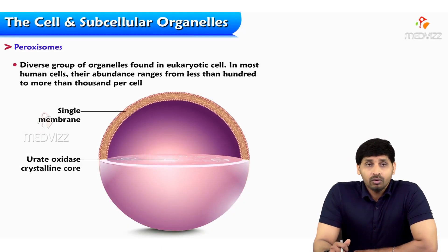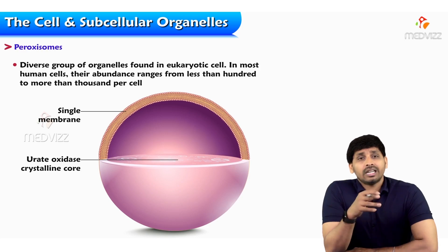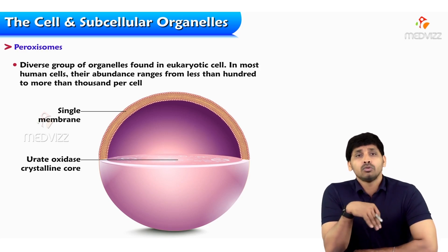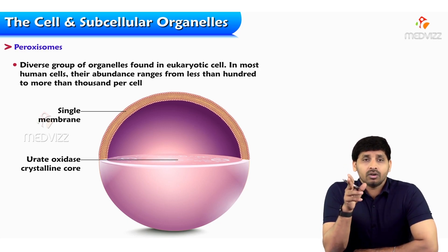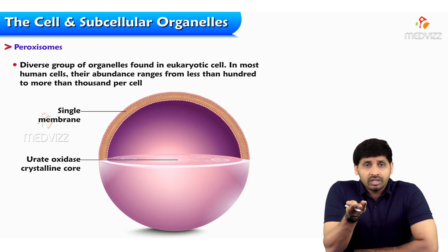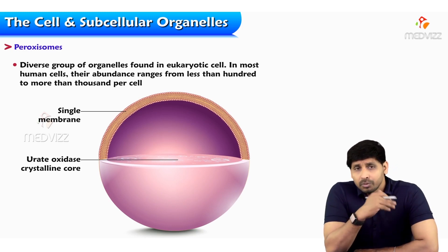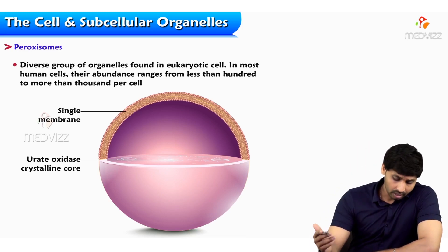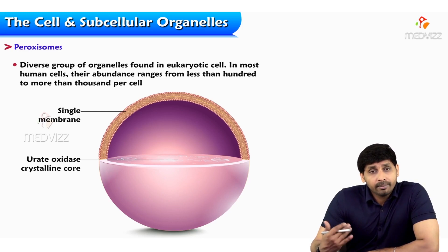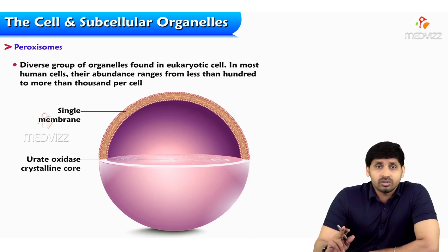In this video we will be discussing about the subcellular organelle peroxisomes. Peroxisomes are a diverse group of organelles found in eukaryotic cells. In most human cells they range from less than a hundred to more than a thousand. The main function of peroxisomes is to fight free radicals. The composition is a single membrane, similar to lysosomes, and the main contents include urate oxidase, which is the marker enzyme for peroxisomes.